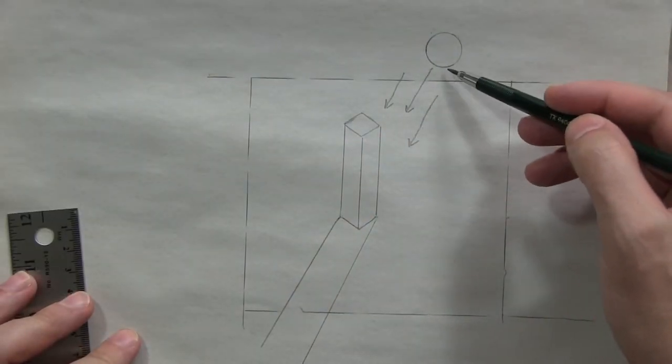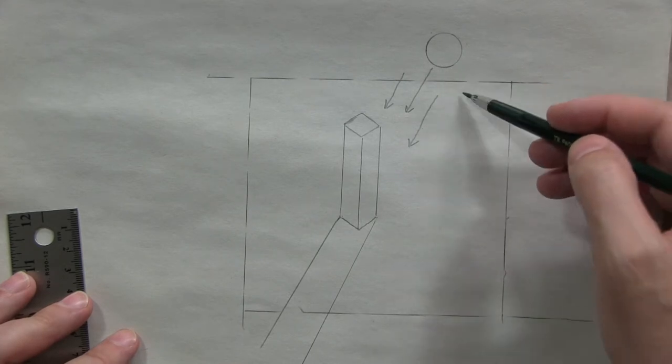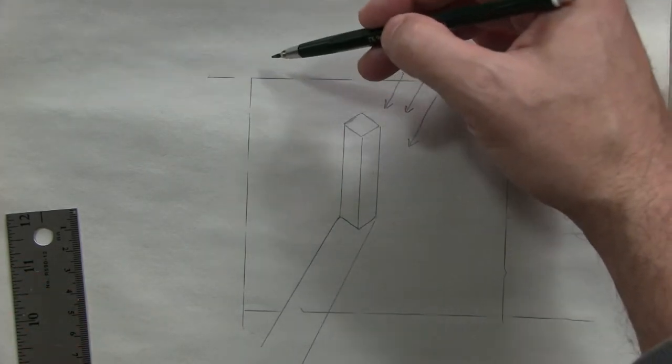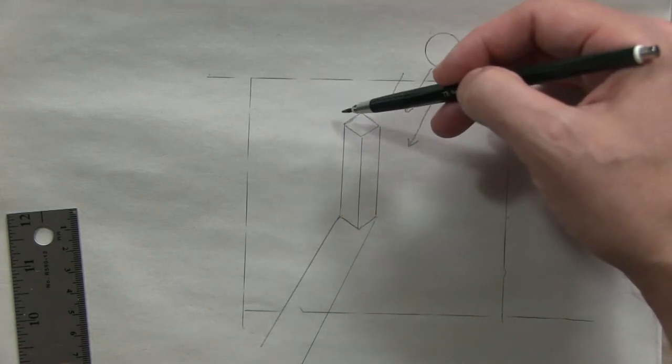So why was the sun here? It's arbitrary. That was my choice, and it's your choice. If you want the sun to be coming from this direction, okay.